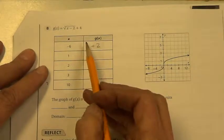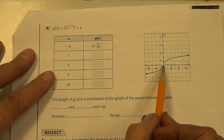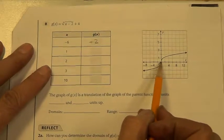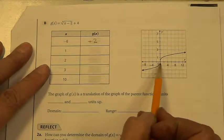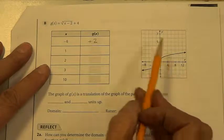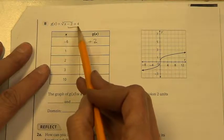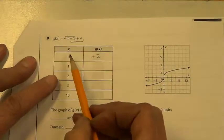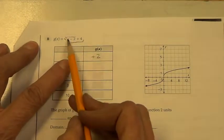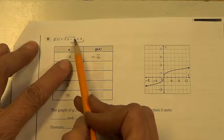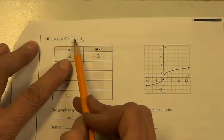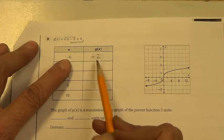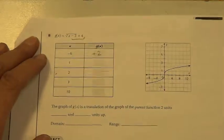This one works the same way. That is the parent function for the cube root. And so you're going to have a graph that looks similar to that. You're just going to transform it by the h and the k. You're going to plug in values here to get that. So let me show you how the first one goes. Negative 6 minus 2 is negative 8. Cube root of negative 8 is negative 2. Plus 4 is 2.